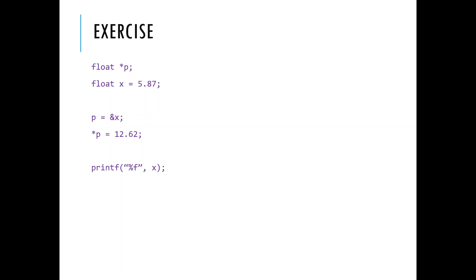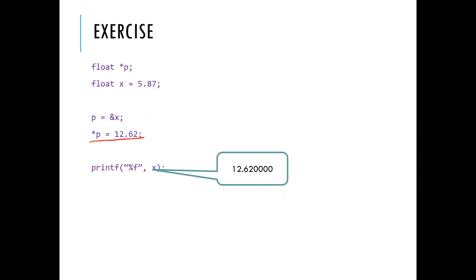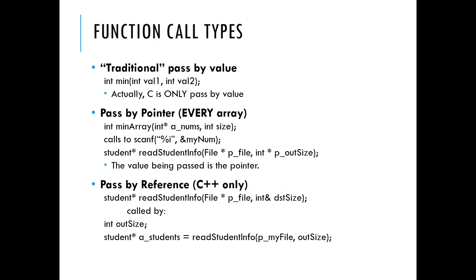Here's a float pointer p, and we have a value x equal to 5.87. I set p to point to x — the box storing 5.87 — and if I dereference it and assign a new value, I actually change the value of x. So x is no longer 5.87; because I shared the address and went into what it was pointing to, I changed it. x is now 12.62 because I changed it using the pointer.